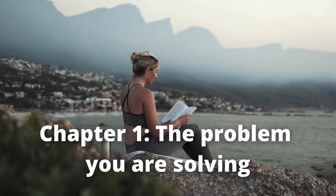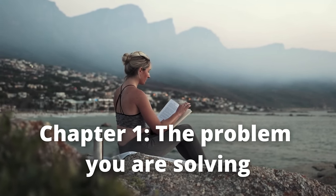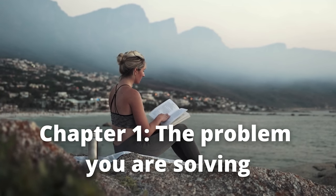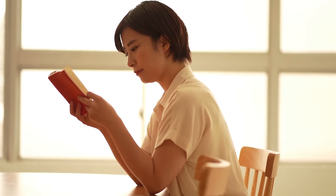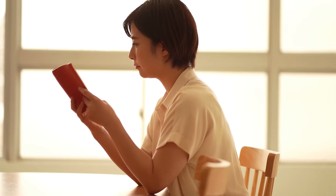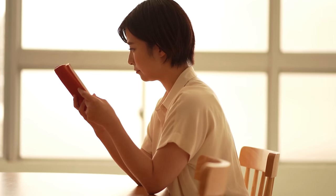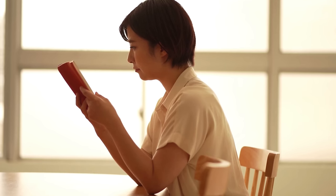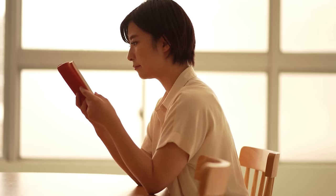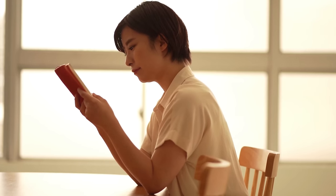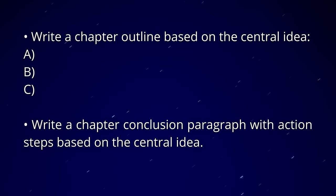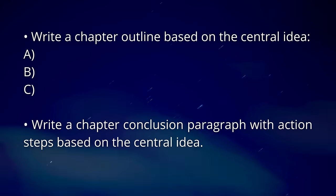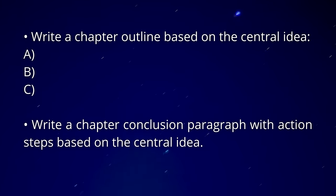Chapter one, the problem you are solving. Chapter one should really be about a problem that you're addressing or solving. For the sake of keeping focused though, let's say you want to write a book about overcoming or managing ongoing symptoms of anxiety. Ask yourself, why is it important to discuss this issue? Why is it imperative to solve this problem? Write a problem that you are attempting to solve based on the central idea that you want to relate to your readers. Write an introductory paragraph about the biggest problem relating to the concept or central idea. Then you want to write a chapter outline based on the main or central idea using three main bullet points. Then you can write a chapter conclusion paragraph with action steps based on the central idea.